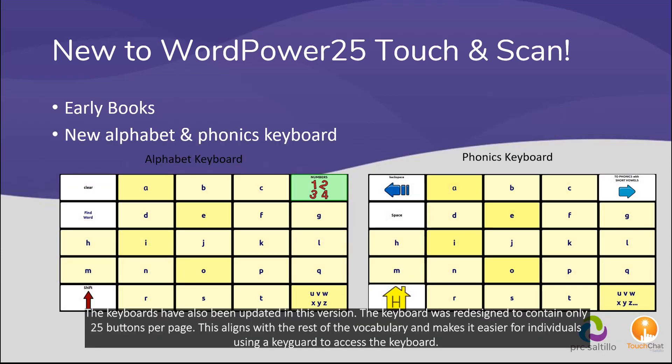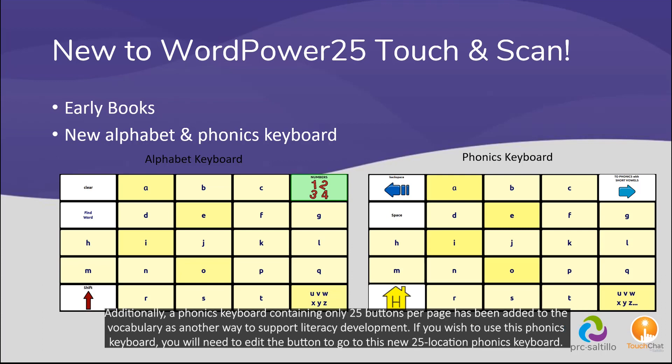The keyboards have also been updated in this version. The keyboard was redesigned to contain only 25 buttons per page. This aligns with the rest of the vocabulary and makes it easier for individuals using a keyguard to access the keyboard. Additionally, a phonics keyboard containing only 25 buttons per page has been added to the vocabulary as another way to support literacy development.